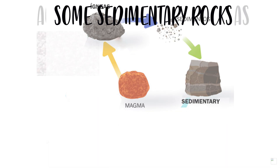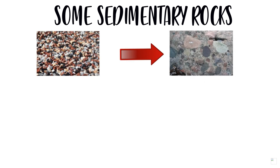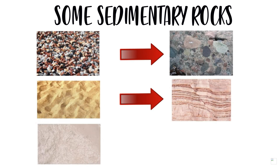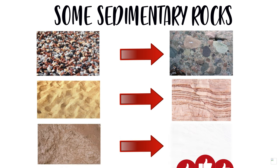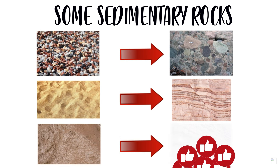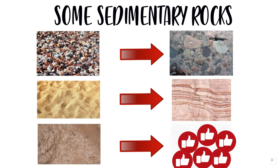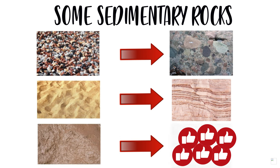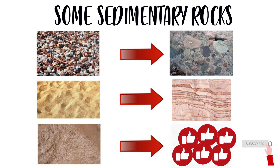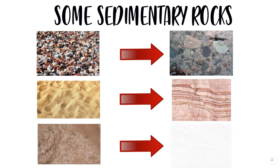For example, gravel turns into conglomerate, sand turns into sandstone, and limes turn into — you guessed it — limestones. If you are enjoying this video, please don't forget to click like and subscribe to the channel. Something very simple like this goes a very long way to help the channel.